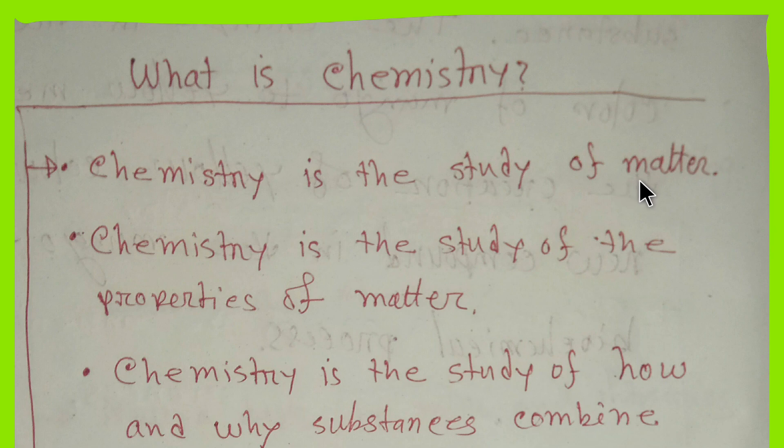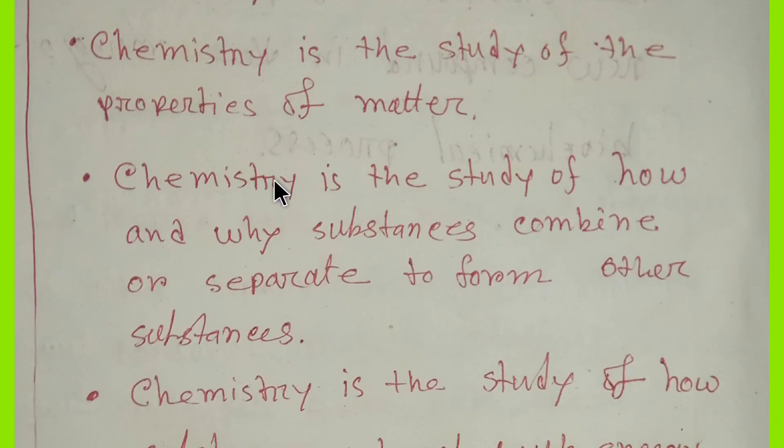Right, and you can say chemistry is the study of the properties of matter. So chemistry is the study of matter and its properties. Well, you can add this here: chemistry is the study of how and why substances combine.